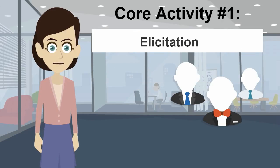Core activity 1: Elicitation. Elicitation is all about engaging with stakeholders to elicit and understand their business needs and requirements. There are various different requirements elicitation techniques which can be applied. Some of these techniques include requirements interviews and workshops.